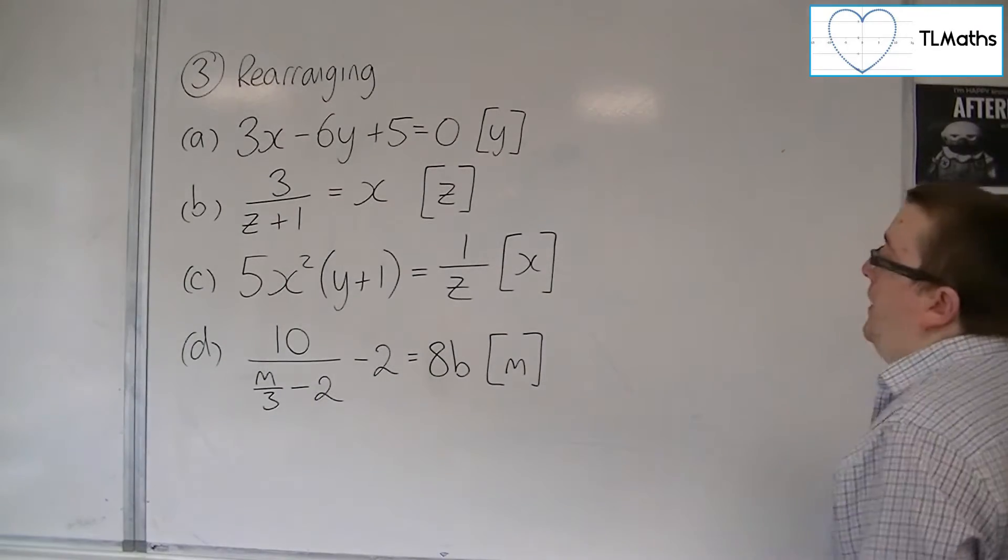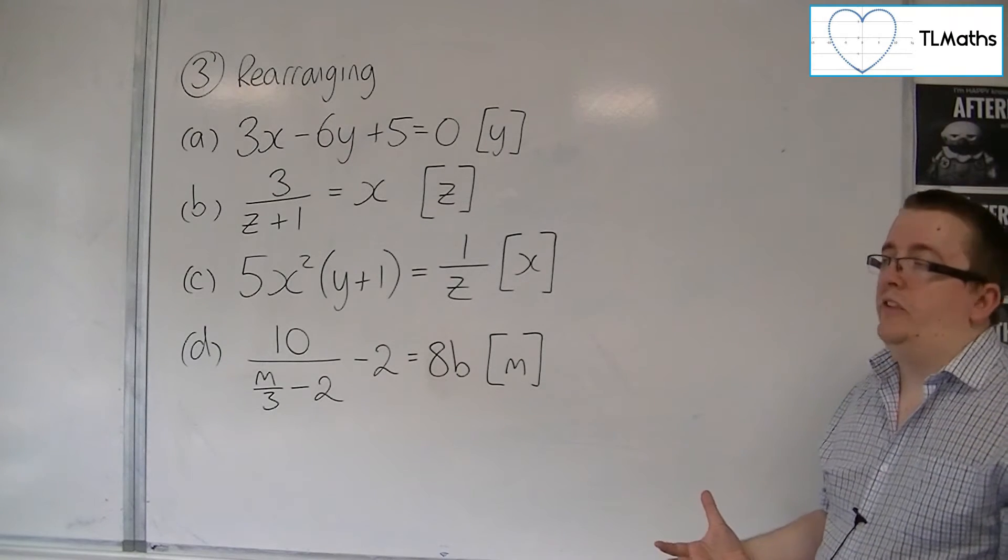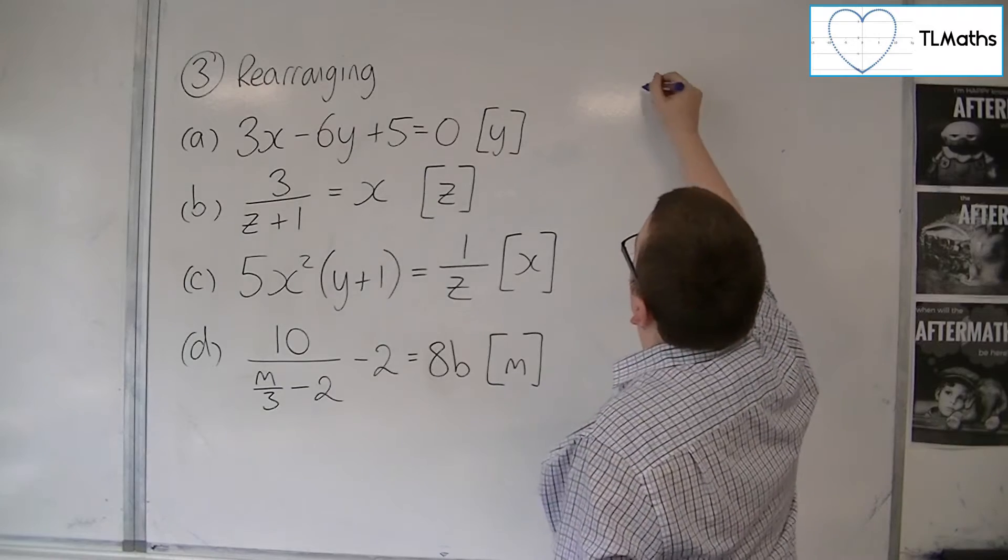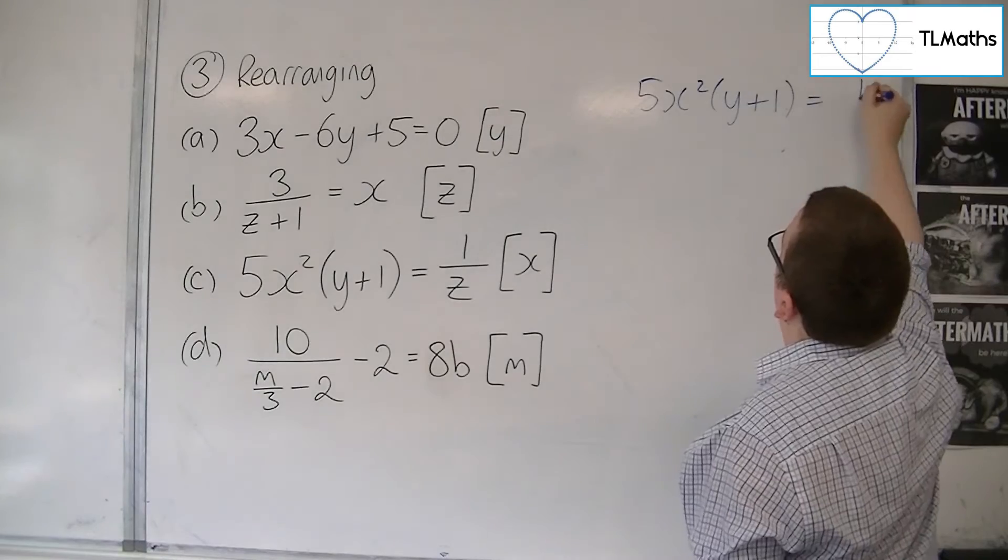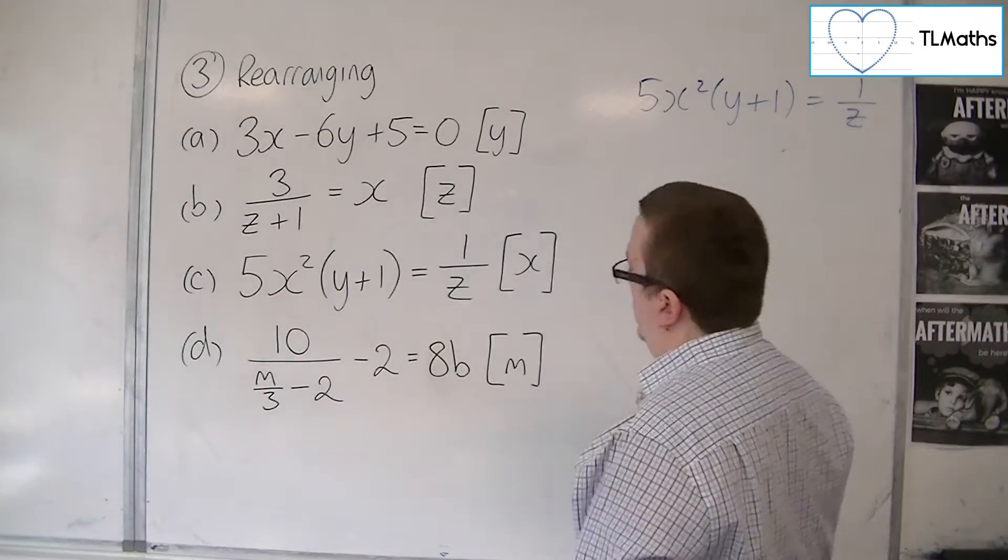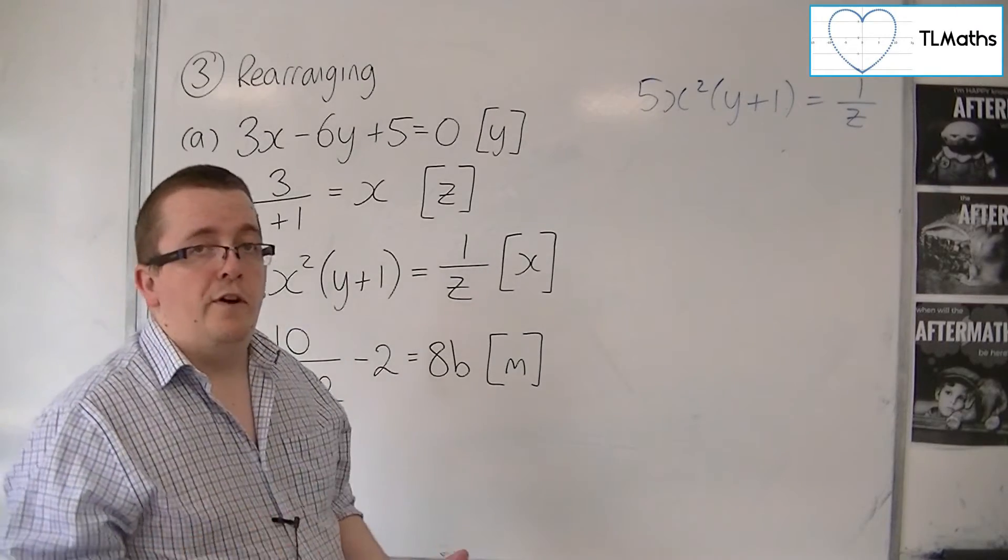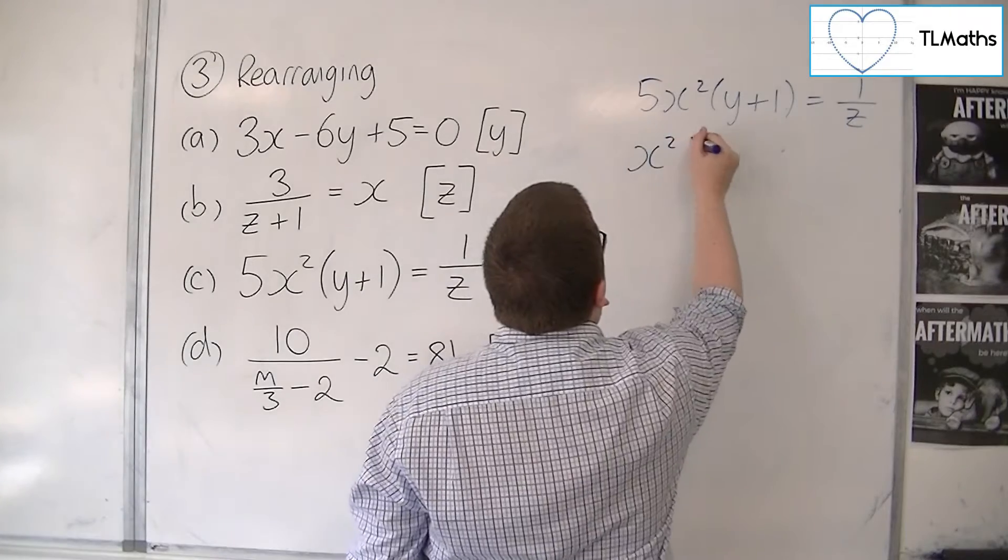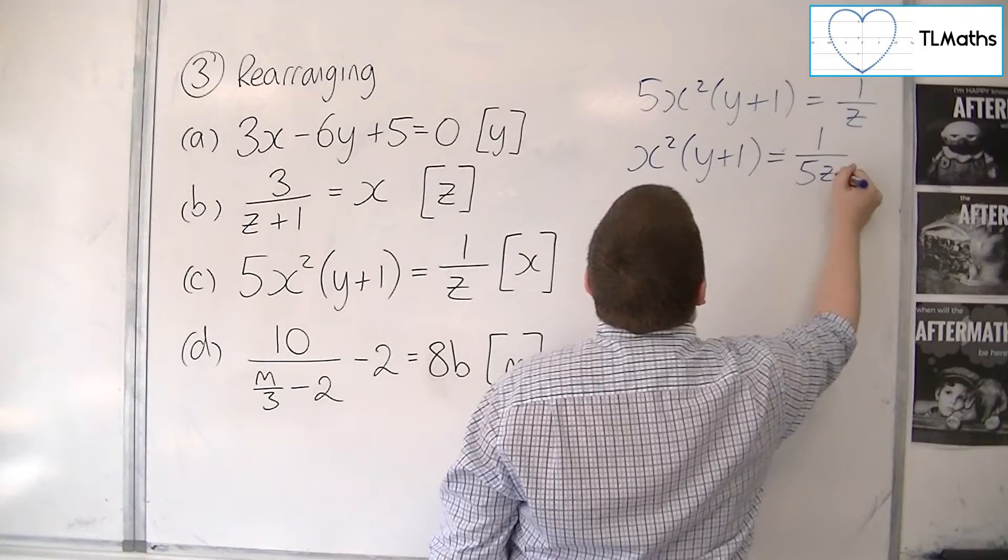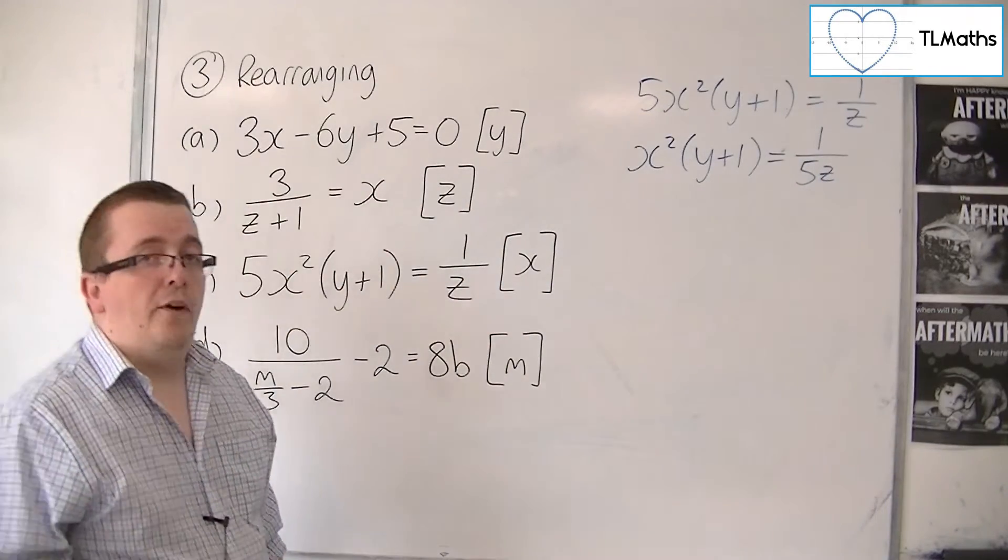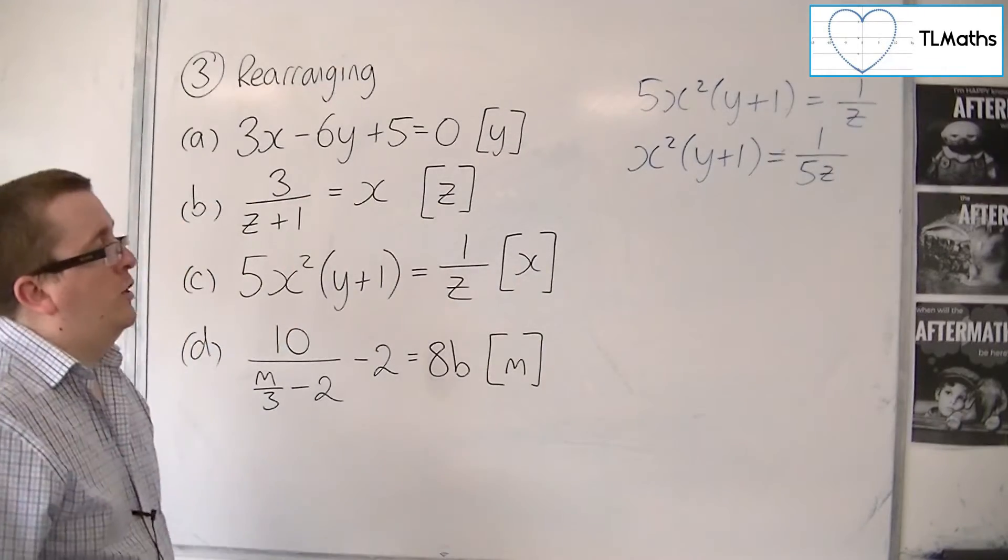Now for C, we have 5X squared times Y plus 1 is equal to 1 over Z and we want X. So first of all, I would probably divide through by the 5. So I'd be left with X squared Y plus 1 is equal to 1 over 5Z. So dividing both sides by the 5 is the same as bringing it into the denominator of that fraction there.